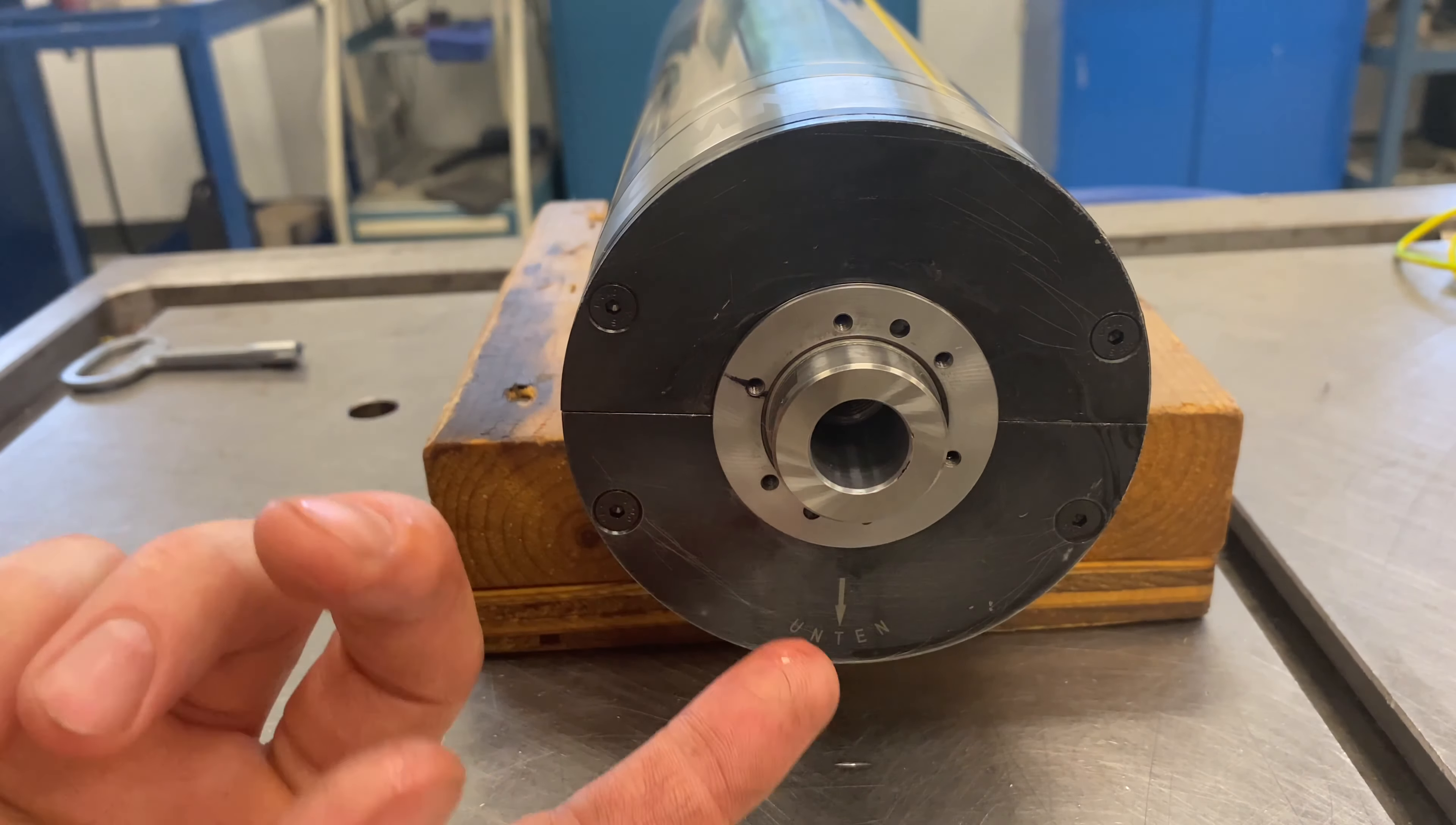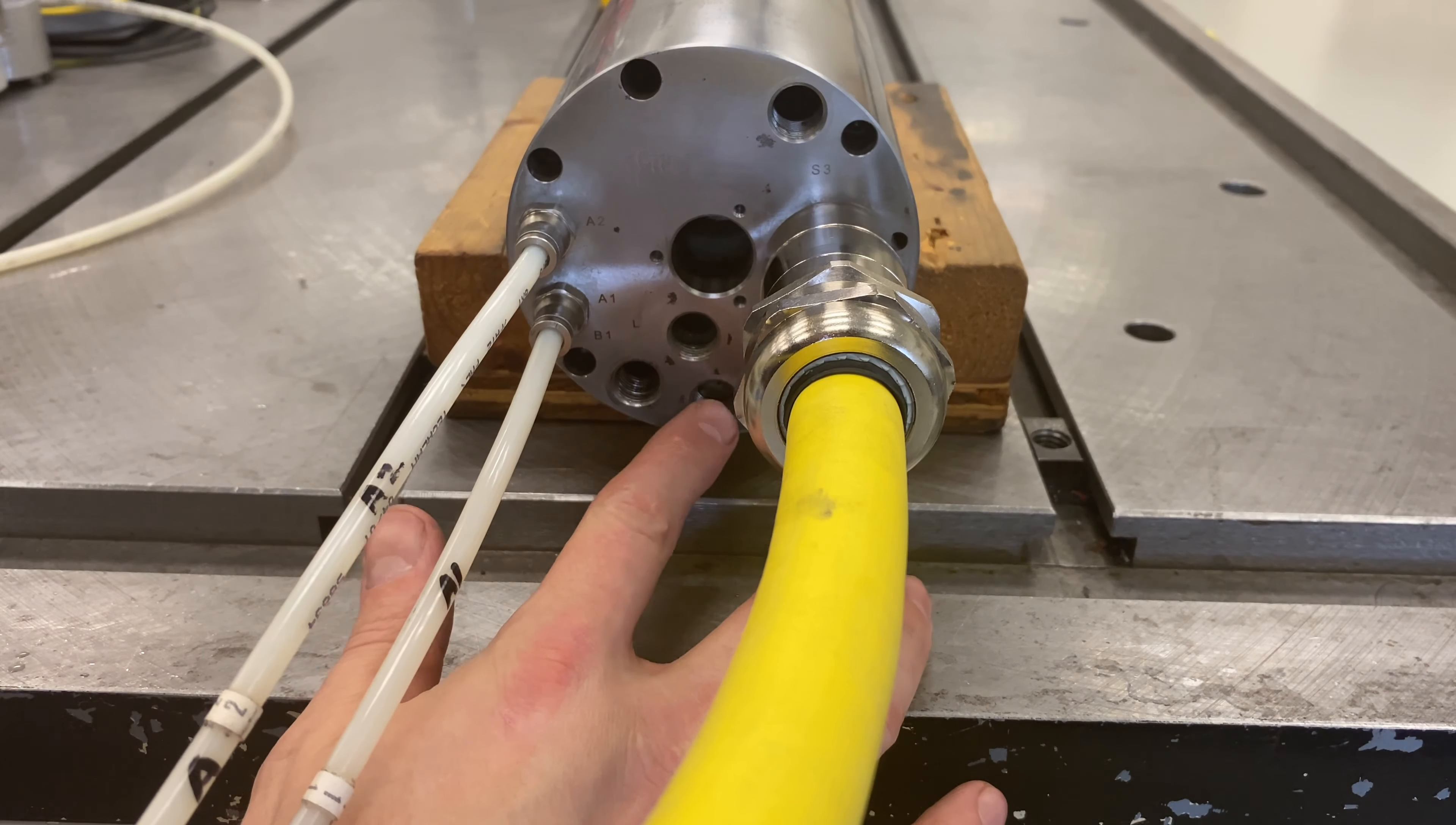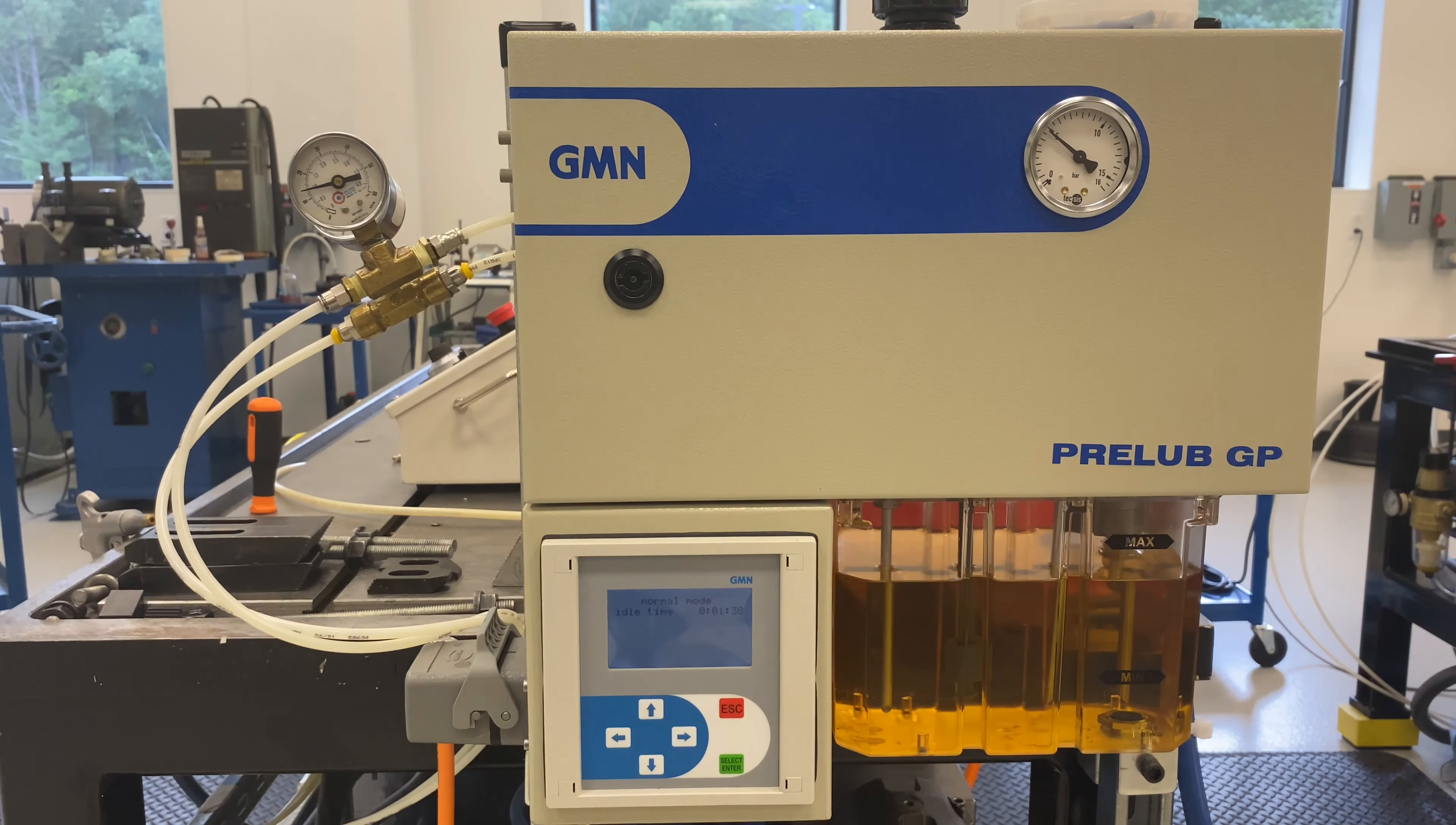You may see some oil draining out of the front of the spindle and the front drain hole. Also some coming out of the back drain hole. Once the lubricator is in normal mode, it will send a signal that it's ready to run.